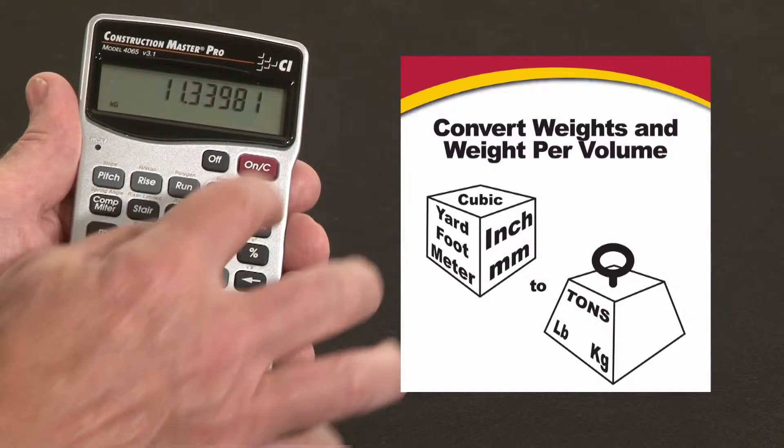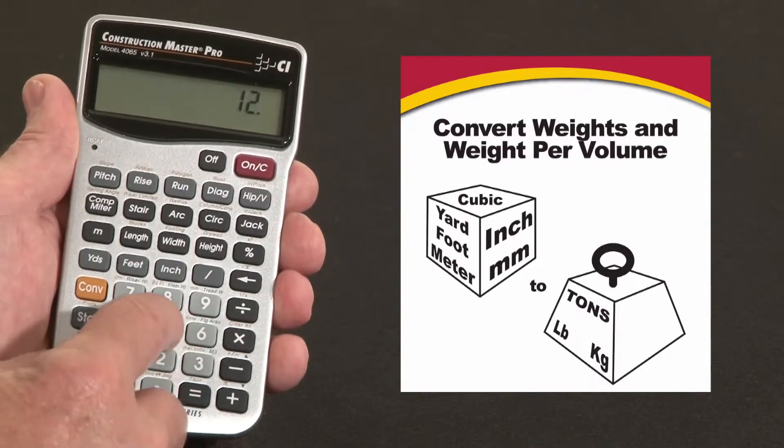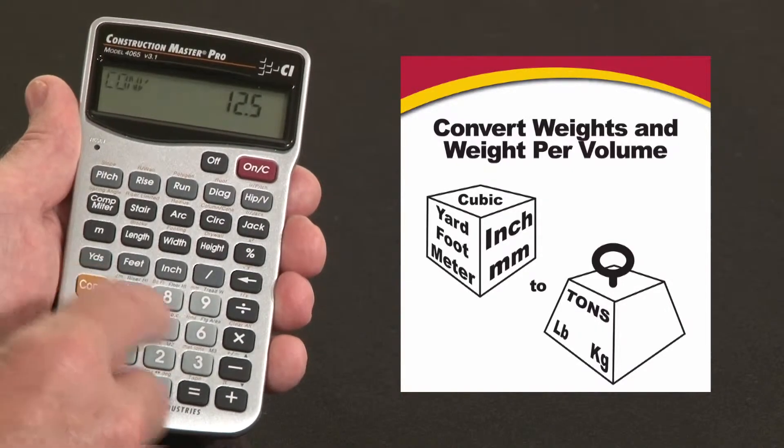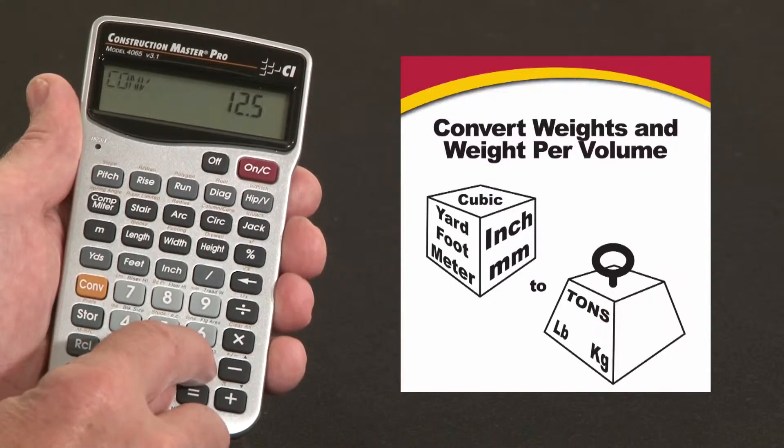You can enter directly metric tons. For instance, say I've got twelve point five metric tons. Over the three, convert three, it says metric tons.